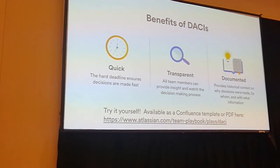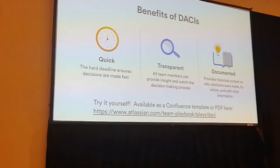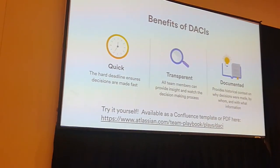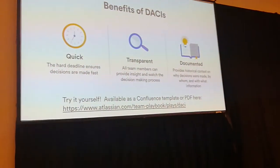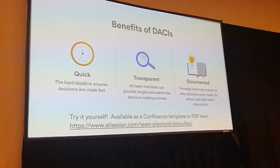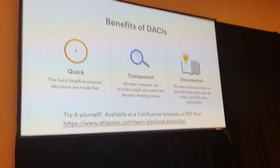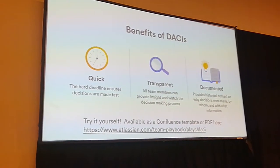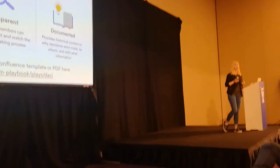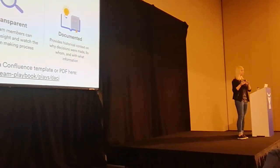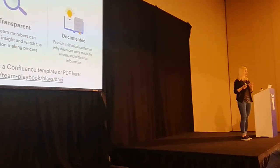Then things get fun, because the page can get really heated — this is the time where everyone has their say, with sometimes very long comments on the decision. It's a pretty simple framework, but it's been really impactful. It helps us make decisions quickly — there's a set deadline, and by that date we must decide something. It's really transparent: everyone can see the decision-making process, what data went in, which options were considered. And it serves as historical documentation so if you revisit it later, you can learn why a decision was made. You can even try it yourself — we have a Confluence template and PDFs online. Not everyone needs to agree with the decision for this to be effective.